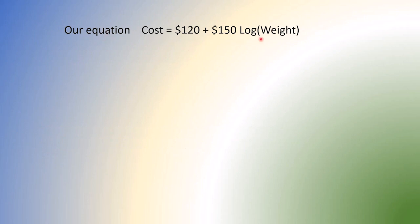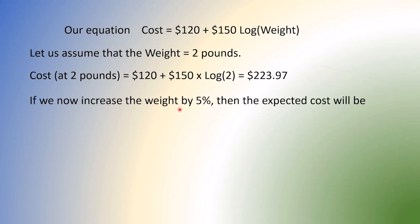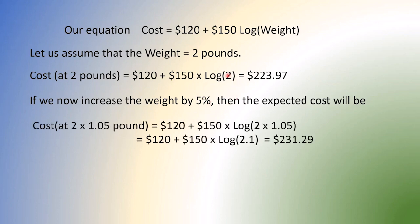So our equation is this one. Suppose our weight is 2 pounds. What's the cost? At 2 pounds will be 120 plus 150 times log 2. And log 2 will be this much base E. So this becomes 223.97. What happens at 5% increase? Which means 2 becomes 2 times 1.05. So the cost of that will be 120 plus 150 times log 2 times 1.05. Which will come out to be this much. So what's the difference between these two? That much. So what we can say is if the weight goes up by 5% then our cost goes up by $7.32. That's what it is.